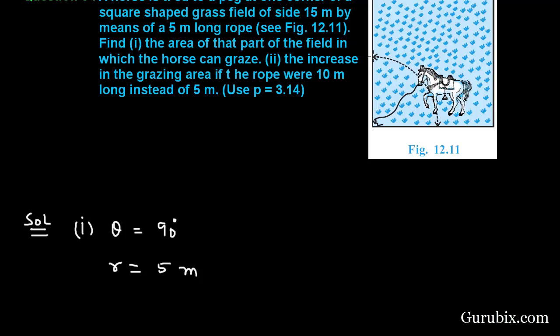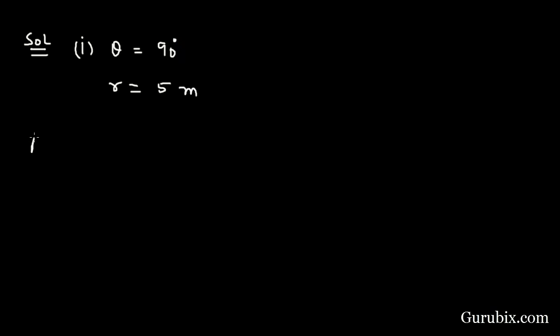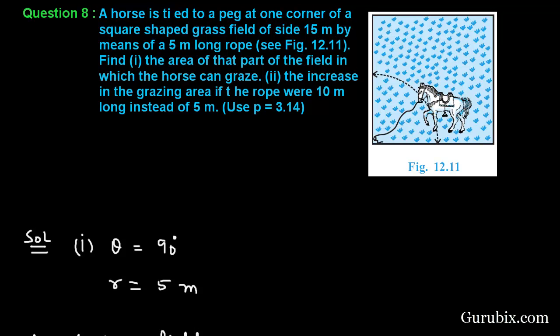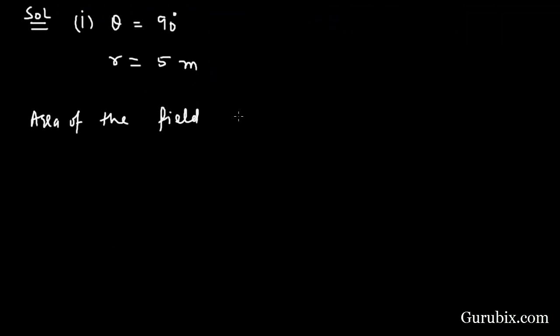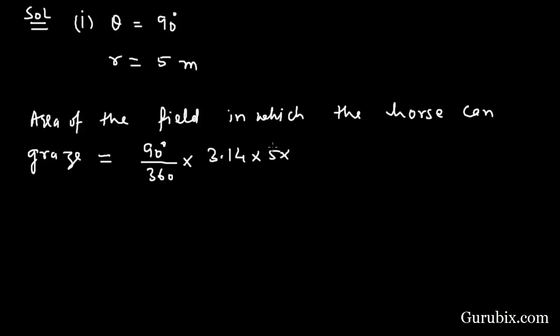We can easily observe that the horse can graze in the shape of a sector. Therefore, area of the field in which the horse can graze is equal to 90 degree over 360 times pi r square. Pi is equal to 3.14, r is 5 meter.